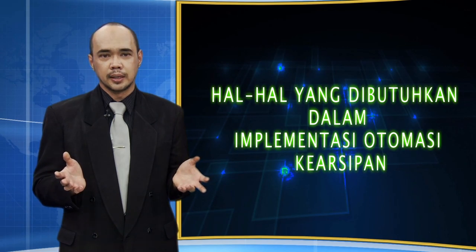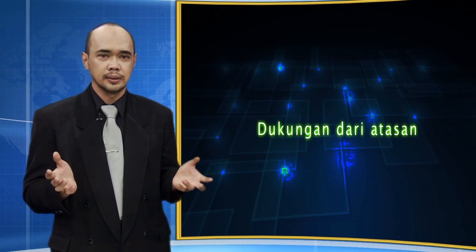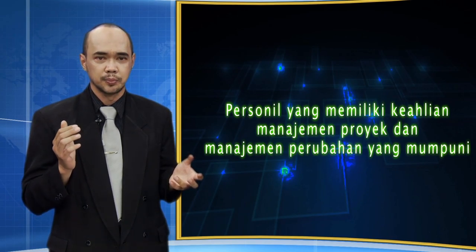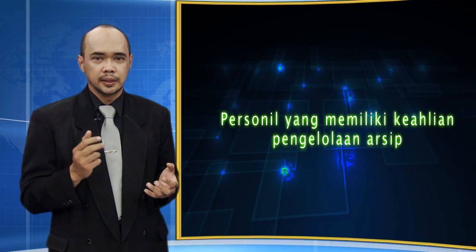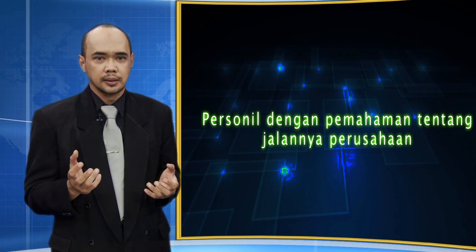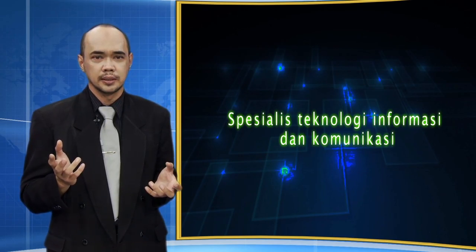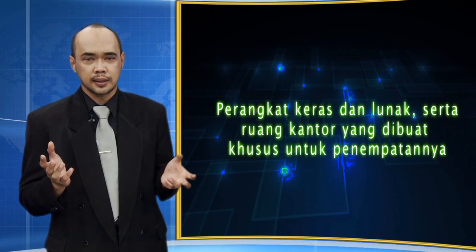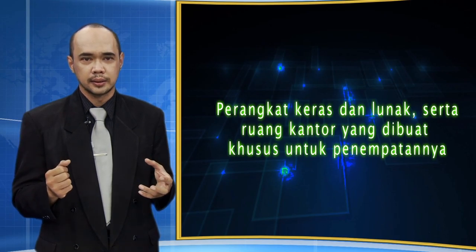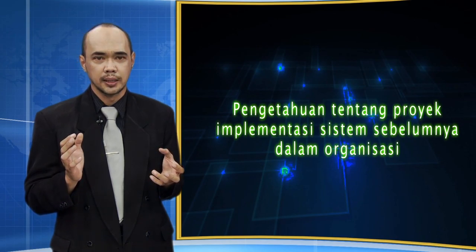Hal-hal yang dibutuhkan dalam implementasi otomasi kearsipan adalah adanya dukungan dari atasan, personil yang memiliki keahlian manajemen proyek dan manajemen perubahan yang mumpuni, personil yang memiliki keahlian pengolahan arsip, personil dengan pemahaman tentang jalannya perusahaan, spesialis teknologi informasi dan komunikasi, perangkat keras dan lunak, serta ruang kantor yang dibuat khusus untuk penempatannya. Juga diperlukan pengetahuan tentang proyek implementasi sistem sebelumnya dalam organisasi.